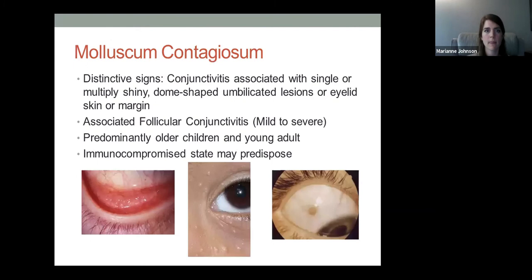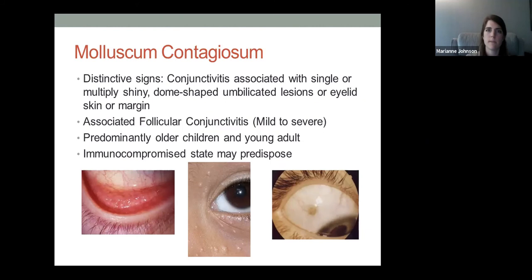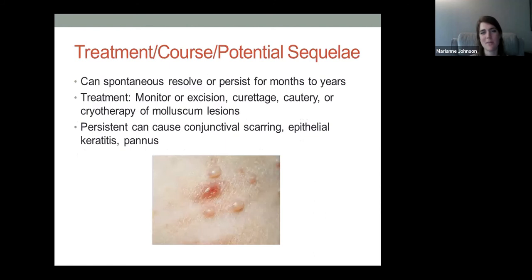Molluscum contagiosum presents with small deposits around the eyelids or on the bulbar conjunctiva. Flip eyelids, palpate lymph nodes, and examine periorbital skin carefully — these lesions can be hard to find. Consider this in chronic follicular conjunctivitis cases. It's more common in older children or young adults and can manifest with immunocompromise. Supportive therapy can calm symptoms, but excision of the lesions is the definitive treatment to prevent chronicity, conjunctival scarring, epithelial keratitis, and pannus.